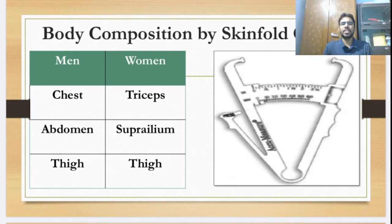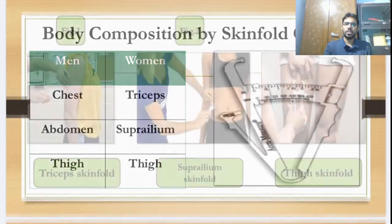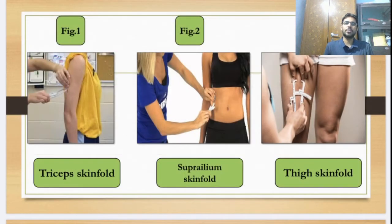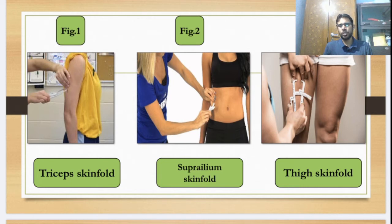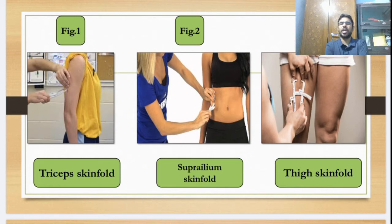For women, we will use triceps, suprailium, and thigh. For the triceps, you measure the fat percentage with the help of a skinfold caliper at an oblique portion. The second is the suprailium skinfold, where you take your body fat percentage from the side oblique portion of your belly in a diagonal position. The last one is the thigh skinfold, where you measure your thigh fat percentage with the help of a skinfold caliper.